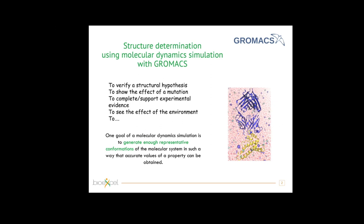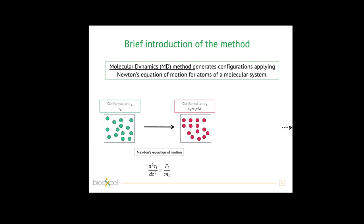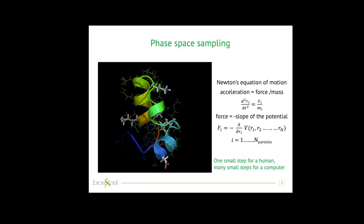Now I will briefly review what molecular dynamics is about, and then move on to how you can do it with GROMACS. The aim is to generate conformations, and molecular dynamics generates these conformations by applying Newton's equations of motion. We always start with a configuration — the position of all atoms, a point in space at time T1. We apply Newton's equation of motion and get a new conformation at time T2. There is a delta T between time one and time two, so we are doing it numerically. Then we apply Newton's equation again and go to a third conformation.